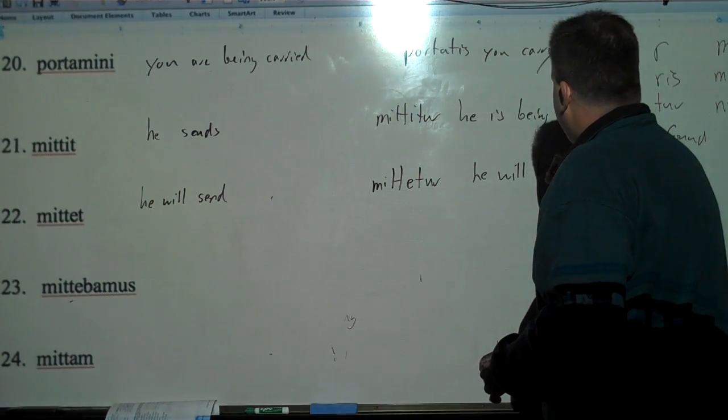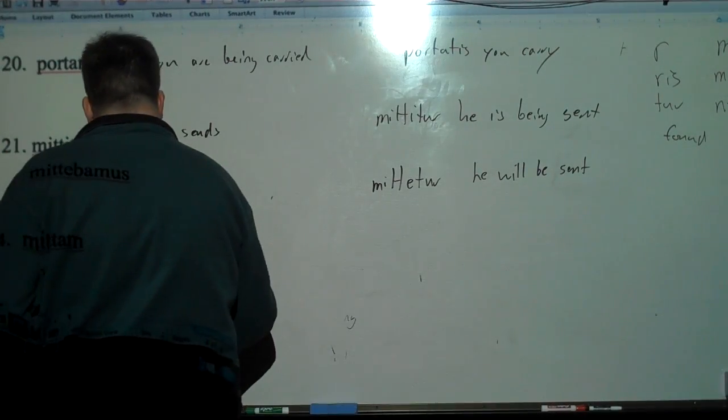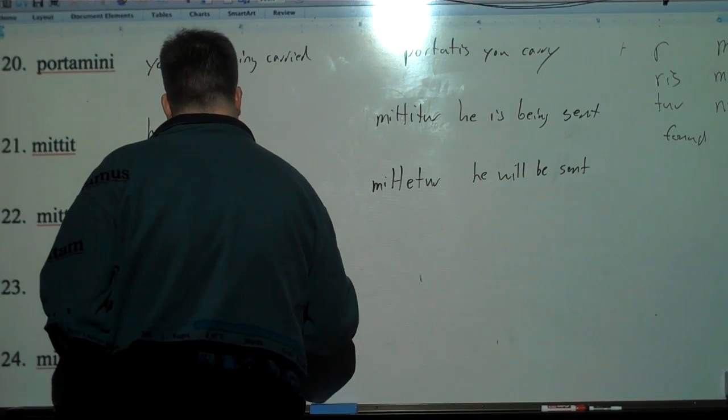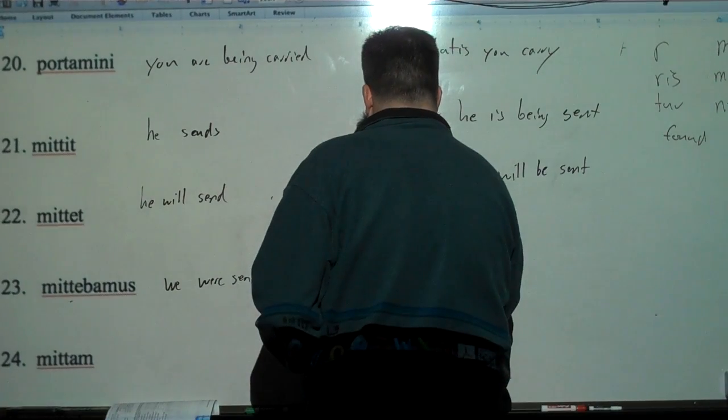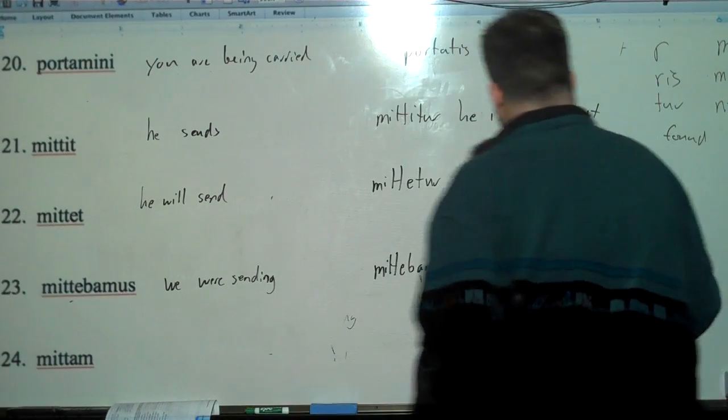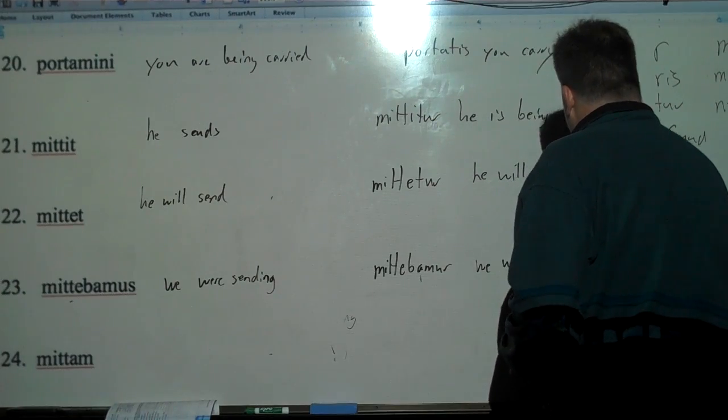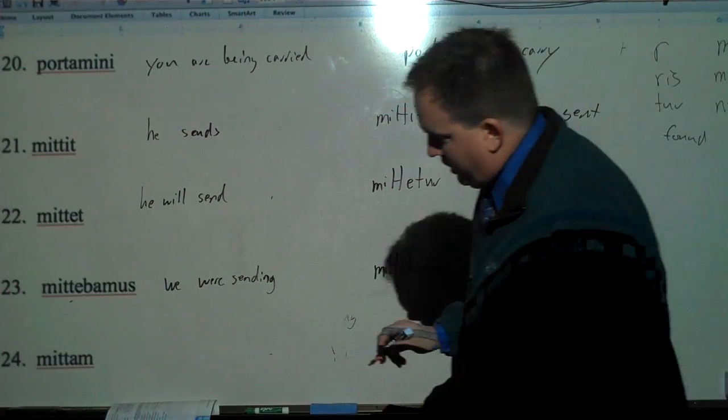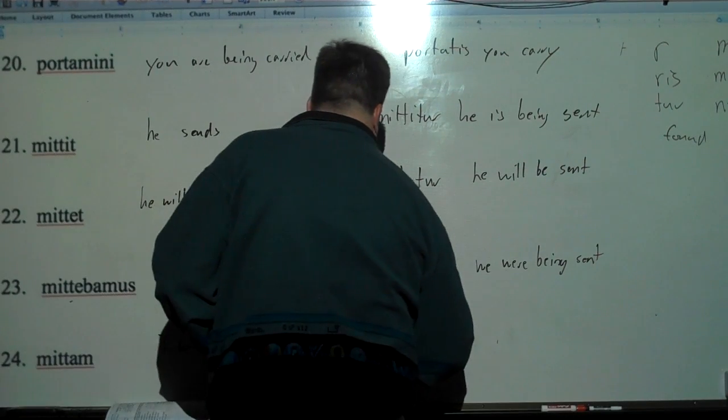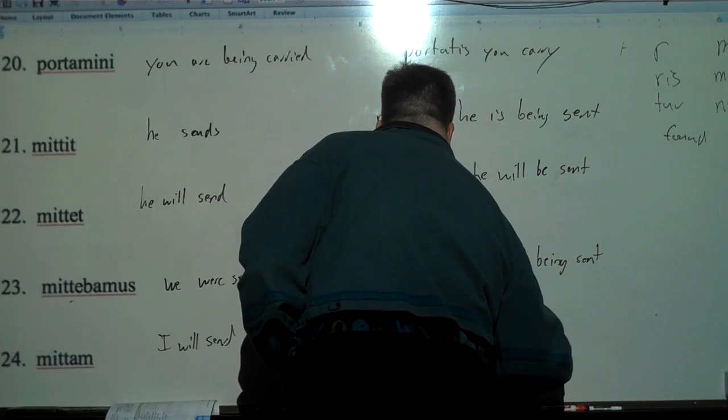Mittebamus. Mus is we. B-A, it's imperfect. So we were sending. And then we make it passive. Mittebamur. We were being sent. And mittar, that would be future. I will send. And that goes to mittar. I will be sent.